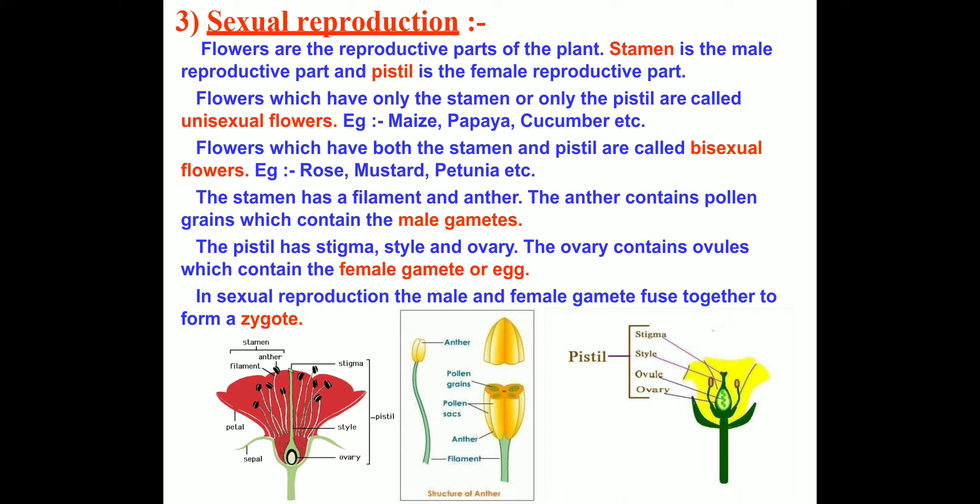Now the structure of the anther. The anther is bilobed, having two lobes, and it contains a pollen sac which bears pollen grains. The stalk-like structure is called the filament.